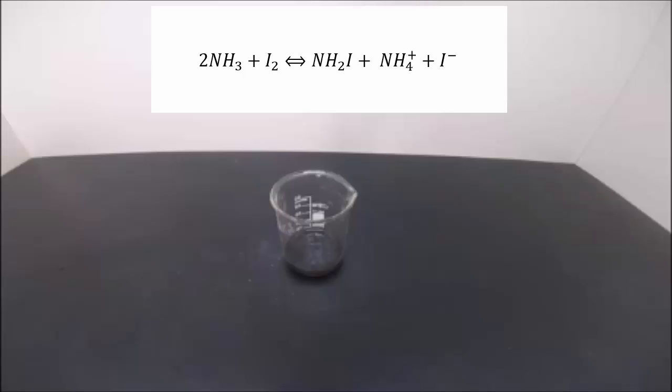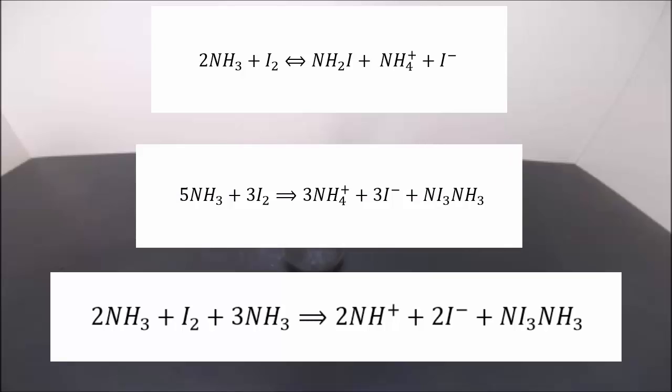What is happening here is the iodine reacts with ammonia to form nitrogen iodide, ammonium ions (NH4+) and iodide ions (I-). This is a two-way reaction, which means that the reaction can either go forwards or backwards. What drives this reaction forward is the presence of excess iodine.